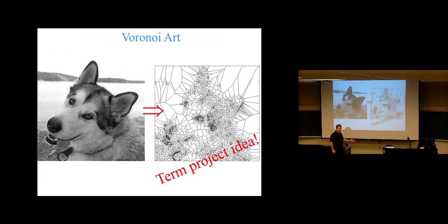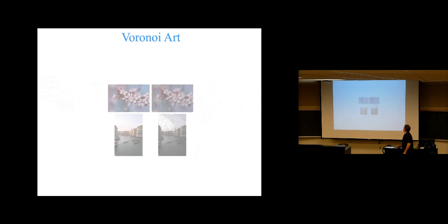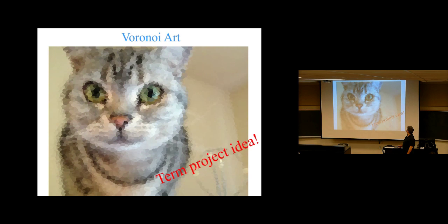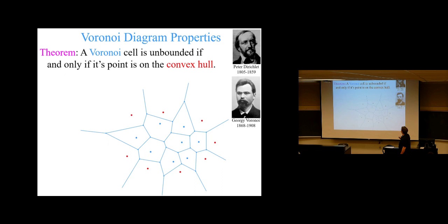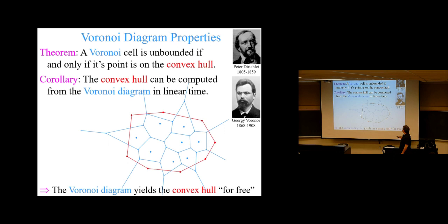You can read more about it in the textbook. We mentioned a term project idea for Voronoi art to maybe augment your TSP art that you're already working on, or just as an alternate project. There's a Voronoi Mona Lisa, a Voronoi cat — pretty cute. The unbounded cells of the Voronoi diagram are associated with convex hull points, giving a nice association between convex hull points and their cells.